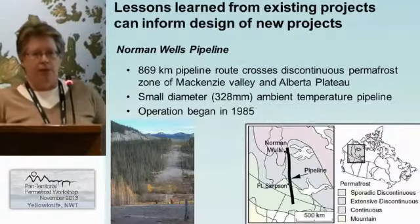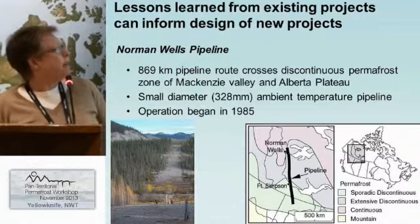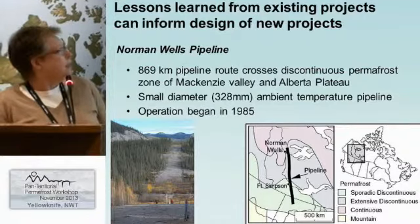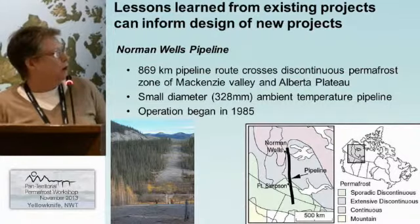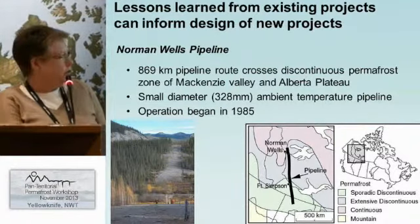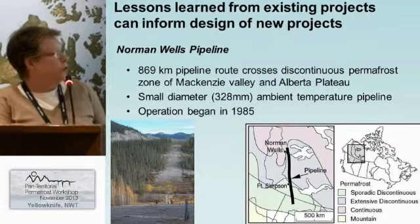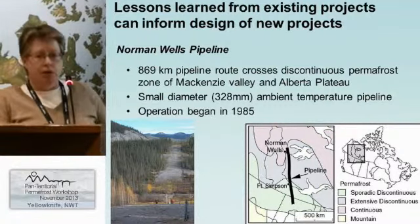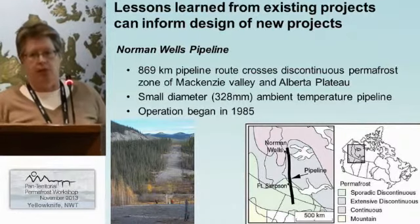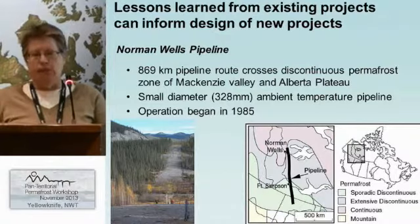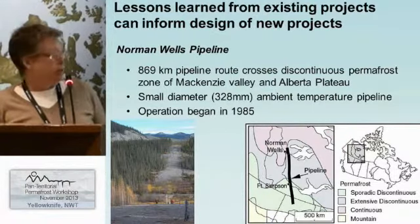I'm going to talk about the work we've done along the Norman Wells Pipeline. The pipeline is over 800 kilometers long. It's completely buried in the discontinuous permafrost zone and goes from Norman Wells all the way down to northern Alberta. It's a fairly small diameter pipeline, and what we call an ambient temperature pipeline — basically no changing of the temperature along the route. It's been operating since 1985.